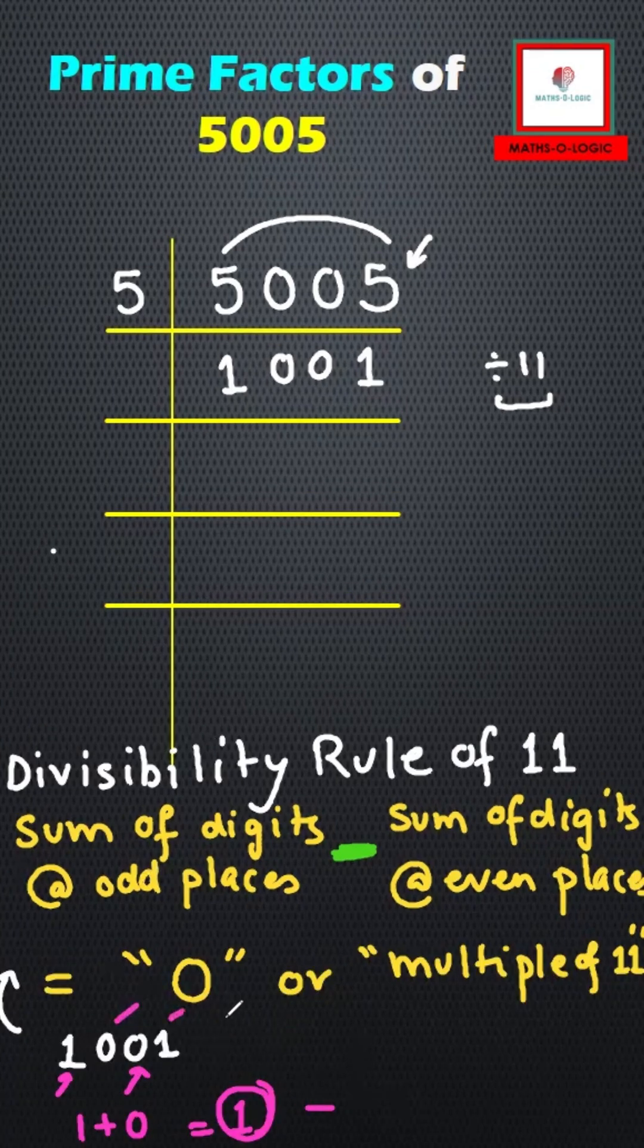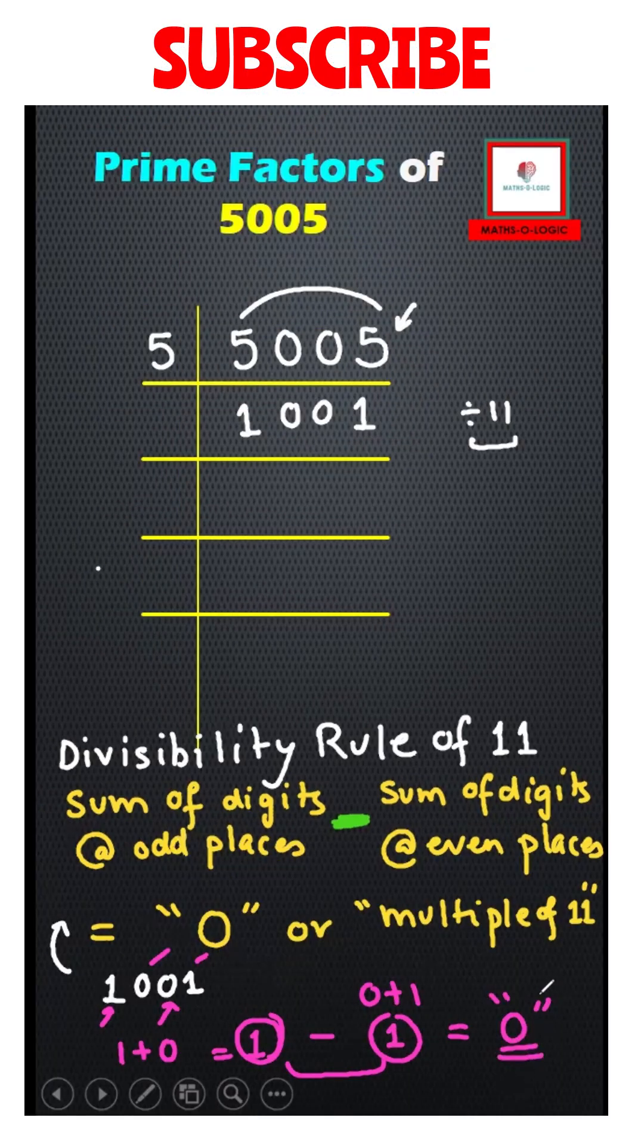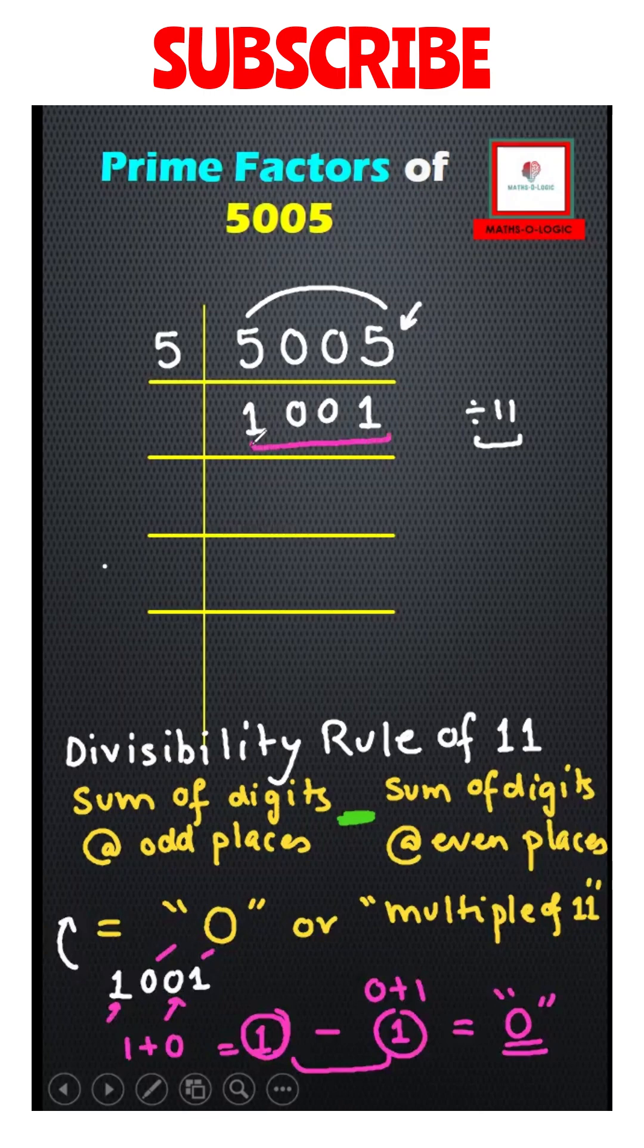0 plus 1 gives me 1 again. Let's subtract: 1 minus 1, I get 0. Since this condition is satisfied, I can say 1001 is exactly divisible by 11.